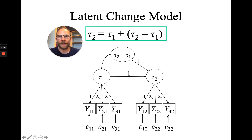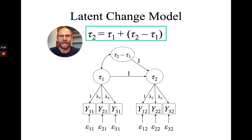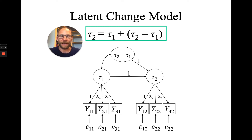So how do you get this variable into the model? In Mplus, for example, you would have to say a latent variable is measured by indicators, but tau2 minus tau1 is not measured by any indicators. So how do you get this latent variable into the model? There is a trick to do that in Mplus, but in other programs that's relatively complicated.